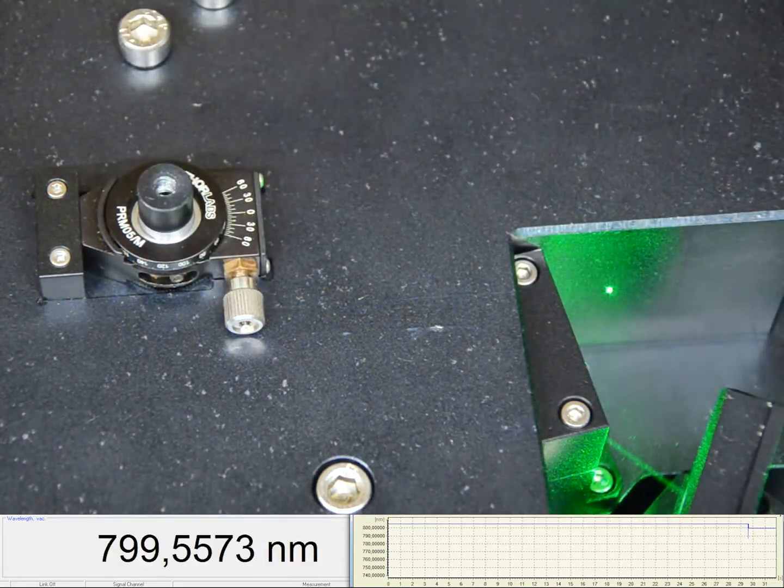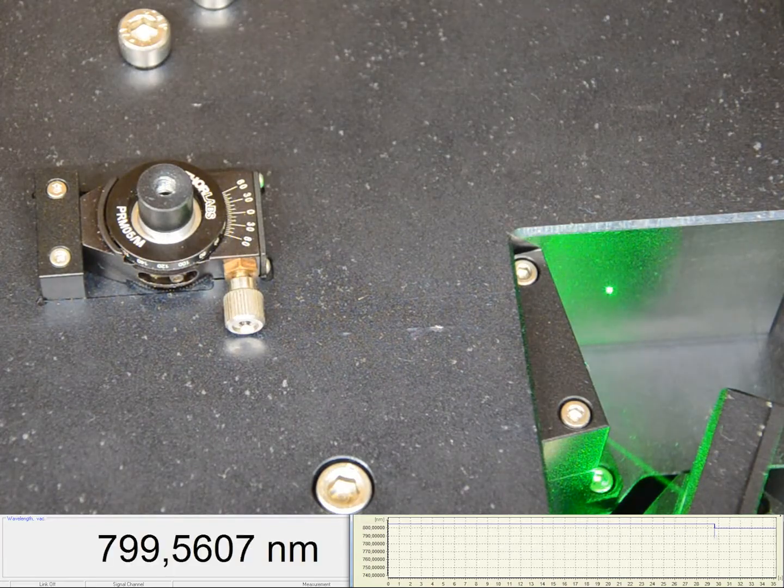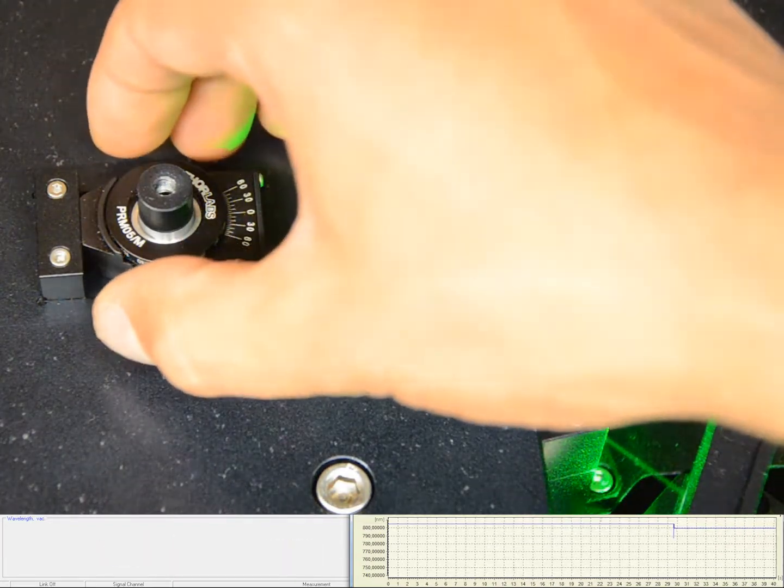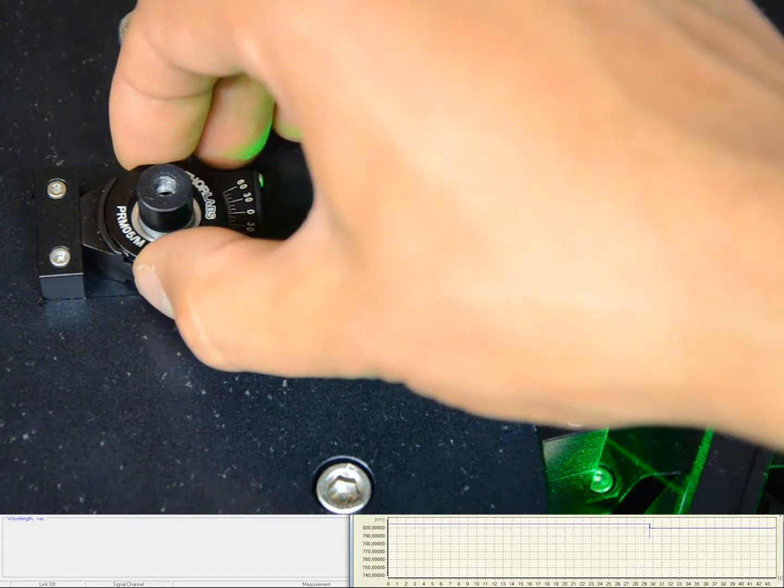Each slide can be tuned through 20-30 nanometers around a central wavelength. Here you can see this demonstrated with a 790 nanometer slide.